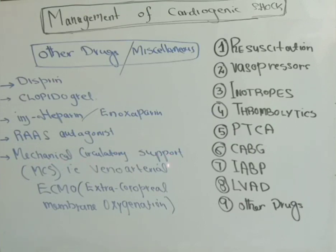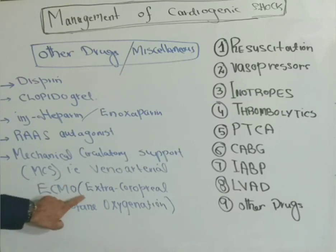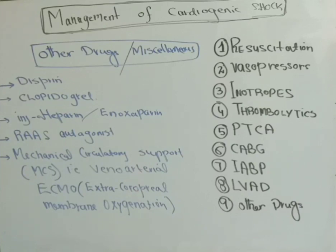A mechanical circulatory support procedure called veno-arterial extracorporeal membrane oxygenation (VA-ECMO) can also be used. In this system, blood from a vein enters the machine, which adds oxygen and removes carbon dioxide, then returns the oxygenated blood through an artery. VA-ECMO increases oxygenation within the body and represents an advanced option in the miscellaneous category of cardiogenic shock management.